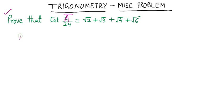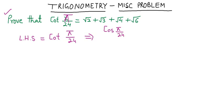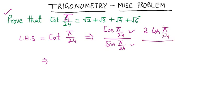To prove this, first of all we take the left hand side. The left hand side is cot(π/24), which may be written as cos(π/24) upon sin(π/24). Here we will multiply the numerator and denominator by 2cos(π/24).